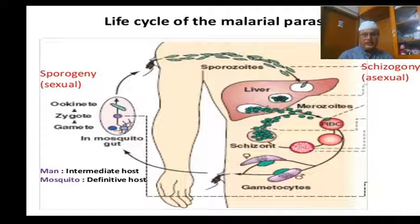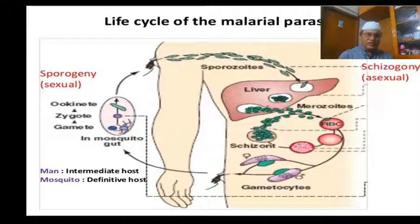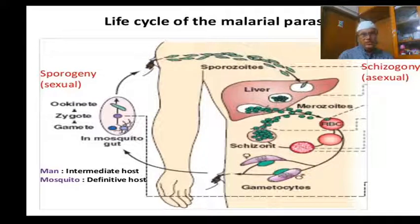Some merozoites produce gametocytes, both male and female. When a mosquito bites an infected human containing malarial parasites, gametocytes — the sexual forms — enter into the mosquito. In the mosquito they develop and produce sporozoites. The sporozoite form is the infective form: when a mosquito bites a healthy human, transmission of the malarial parasite occurs.